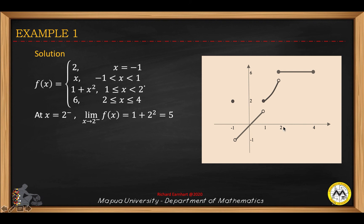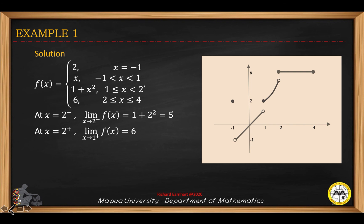At x equals 2 from the left, the graph is the parabola, so the limit will be 1 plus 2 squared equals 5. At x equals 2 from the right, the function is the constant function 6, so the limit is 6.